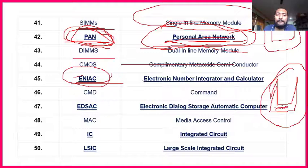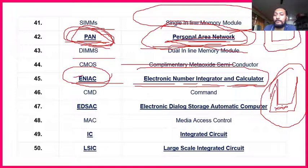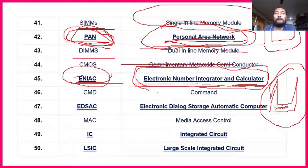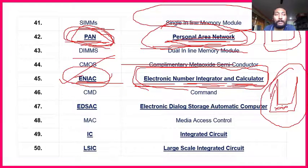ENIAC — Electronic Numerical Integrator and Calculator — is important. Commerce and science students during their degree course use a scientific calculator with sine, cosine, theta — ENIAC is that type of calculator. It is not a normal basic calculator with just plus, minus, multiply, divide; it handles mathematical operations like sine and theta.